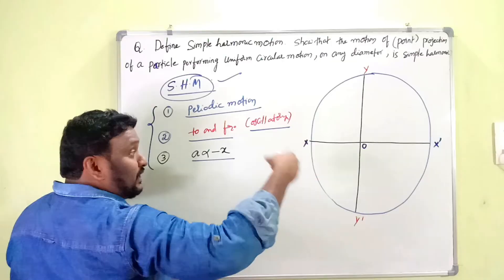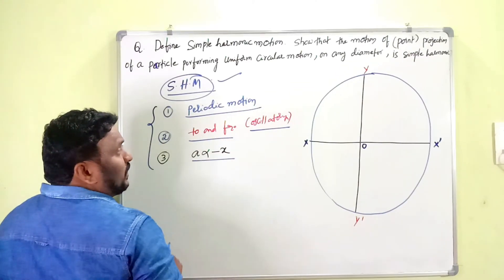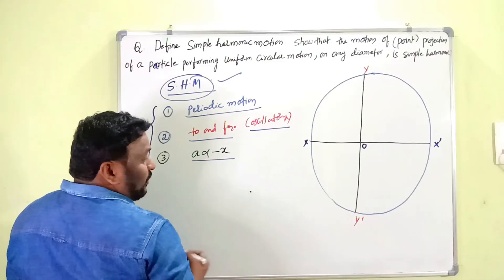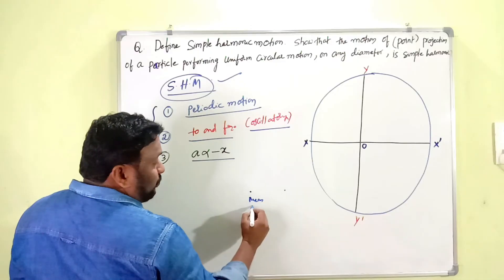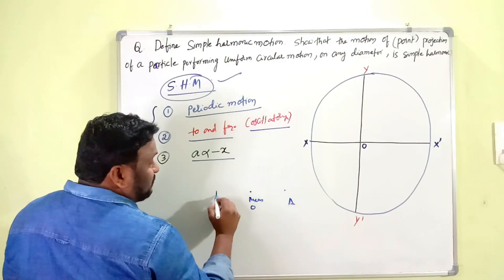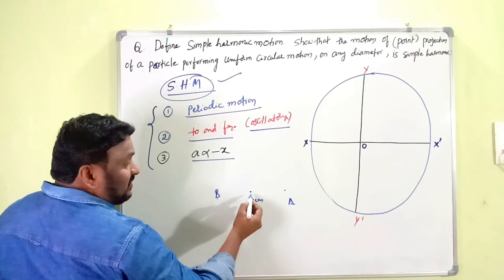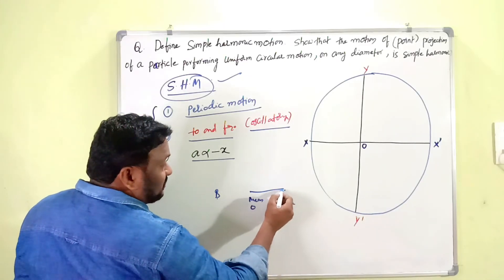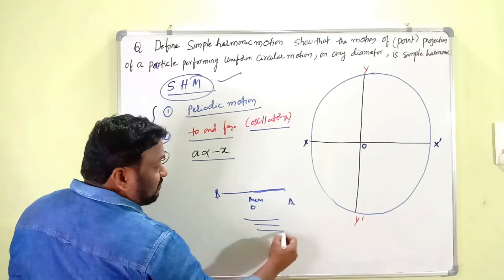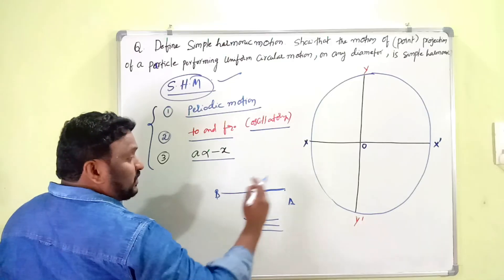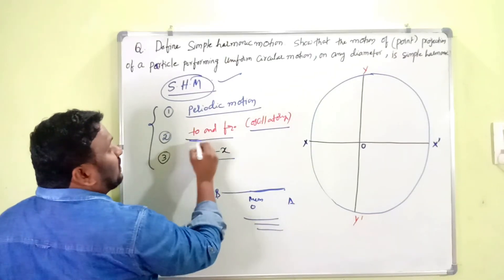To-and-fro motion means: there is a mean point O, and two extreme points A and B on either side. The particle moves from one extreme to the other, crossing the mean position each time. The extreme points are the farthest positions from the mean.